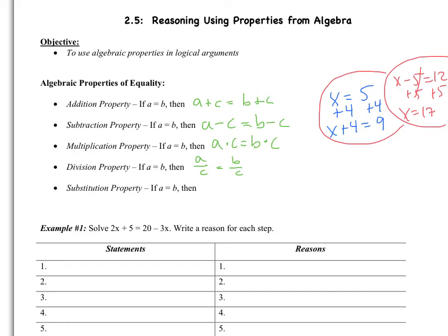The last property is the substitution property. If A equals B, then A can be substituted in place of B. I know that these are a little abstract, so I think we should just start right away with an example.